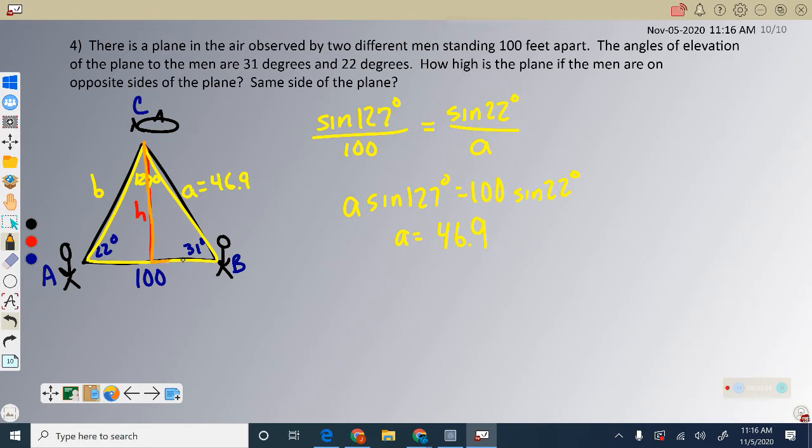I now have a right triangle. In this right triangle, I have 31 degrees, the side opposite is H, that's what we're trying to find, and the hypotenuse we just found was 46.9. The trig function that deals with opposite and hypotenuse is sine. So at the end of law of sines, you're doing a right triangle with sine.